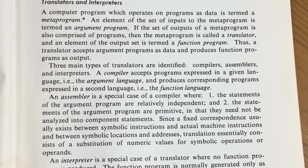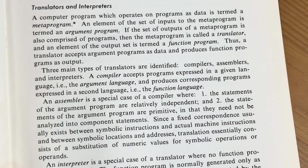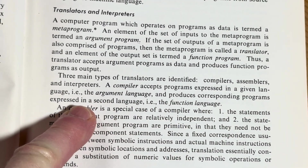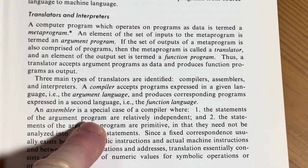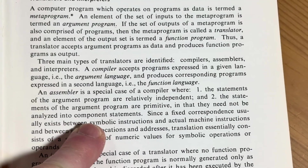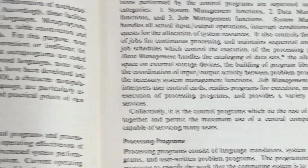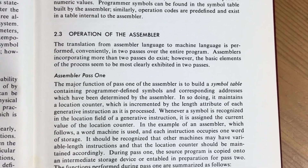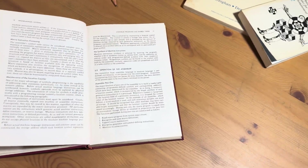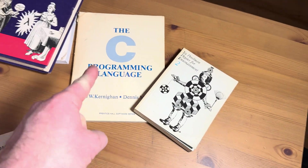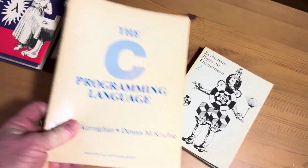Three main types of translators are identified: compilers — so like C is compiled — assemblers, and interpreters. A compiler accepts programs expressed in the given language, the argument language, and produces corresponding programs expressed in the second language, the function language. An assembler is a special case of a compiler where the statements of the argument program are relatively independent, and the statements of the argument program are primitive in that they need not be analyzed into component statements. Pretty cool book. Whenever I think of assembly, I always think of Linus Torvalds and Linux, because he did the kernel — though I think that was done in C. Yeah, I think the Linux kernel was written in C.